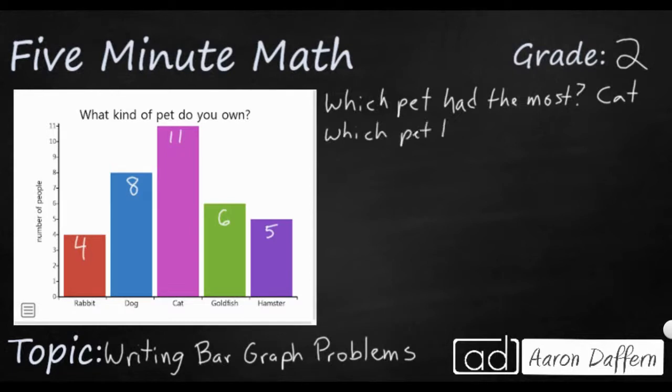And then I could ask the same thing but it would be the opposite. Which pet had the least? So this is just to understand what these two terms mean. Most and least. In this case we're looking at the greatest and the smallest. And so the smallest is going to be the rabbit. There's only four students that chose the rabbit.